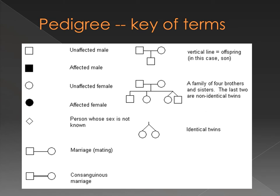First thing we're going to talk about is pedigrees, and you need to know what these symbols mean. Pedigrees are basically like a family tree. Squares represent males — here are two squares — unaffected male and affected male. If it's colored in, that means that the individual is affected.